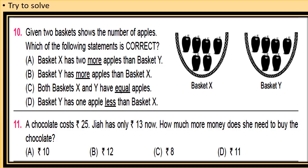Question number 11: A chocolate cost rupees 25. Jiya has only rupees 13 now. How much money more does she need to buy the chocolate? Now chocolate cost is rupees 25 and Jiya has only rupees 13. So how much more we will add in 13 will be the amount of money she will need. So 25 minus 13 will be the correct answer.